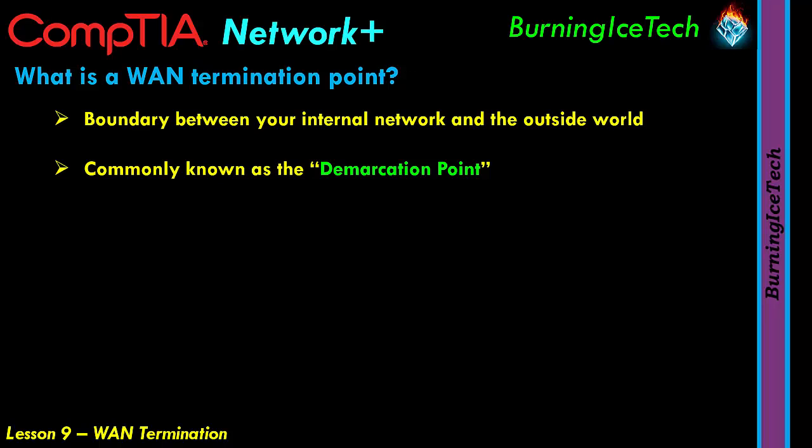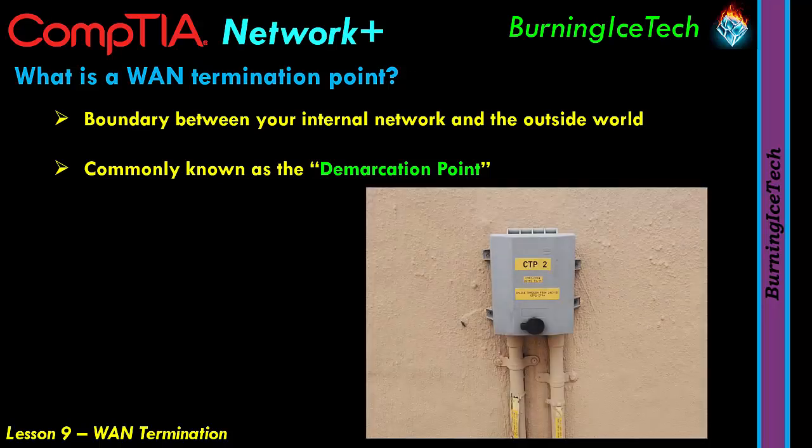In case you're wondering what this WAN termination point might look like, here is a photo I took of my own WAN termination box outside my house. This might vary from house to house or business to business. This specific box can take up to either two or four houses — there's only one cable connected to it at this point in time, but that's essentially what the termination box would look like.